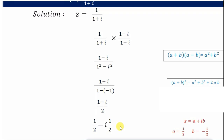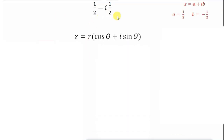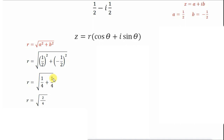Once we have the standard form, we can find the modulus and argument. The modulus r = √(a² + b²) = √((1/2)² + (-1/2)²) = √(1/4 + 1/4) = √(2/4) = √(1/2) = 1/√2. So the modulus r = 1/√2.